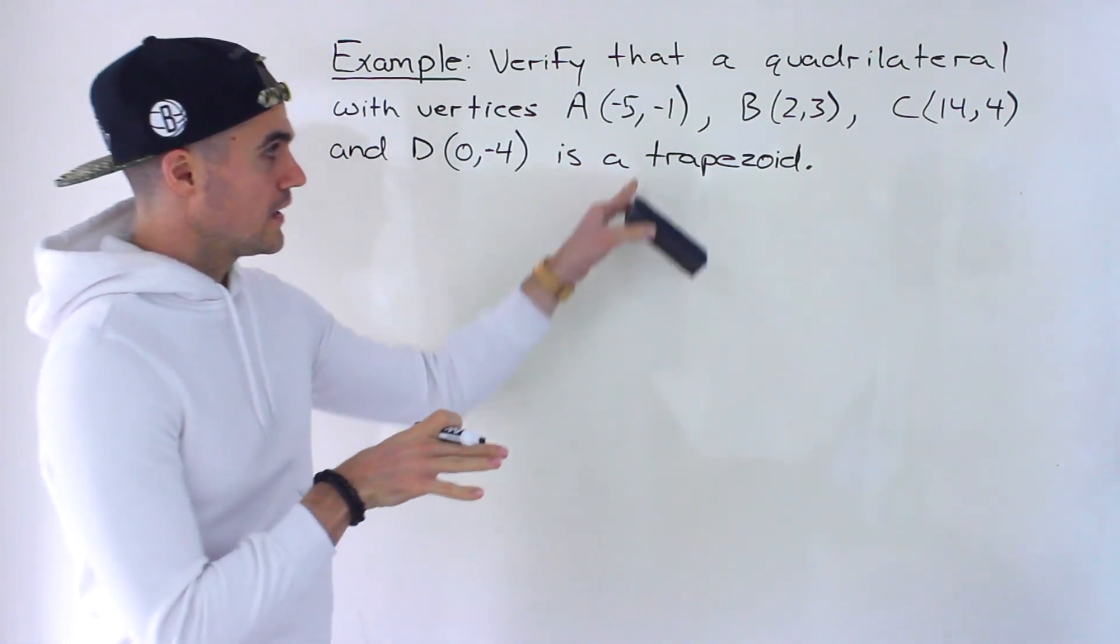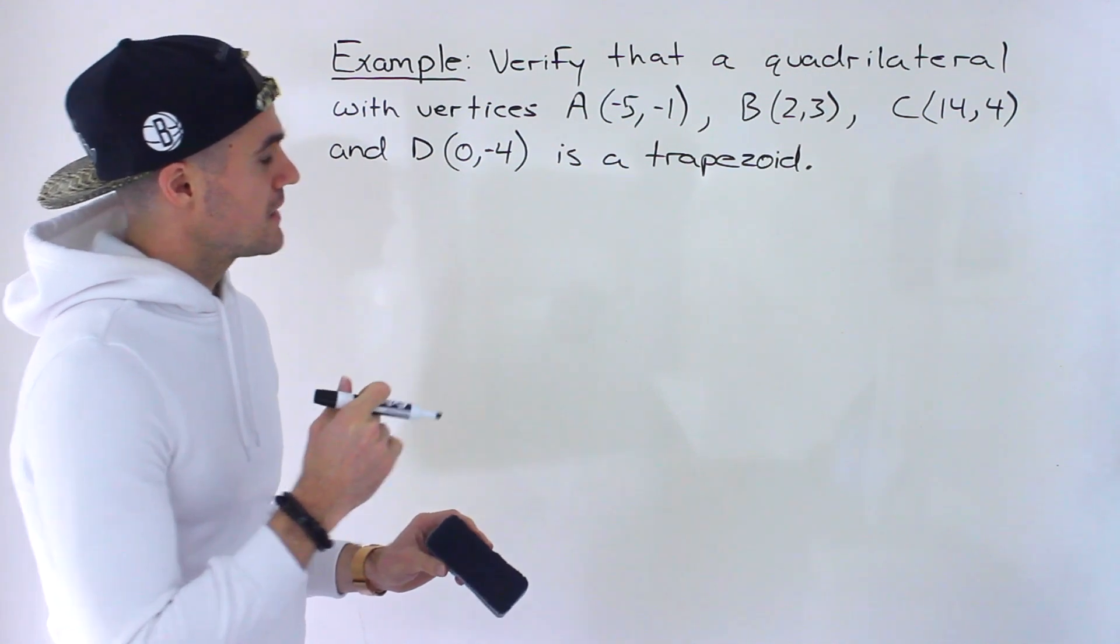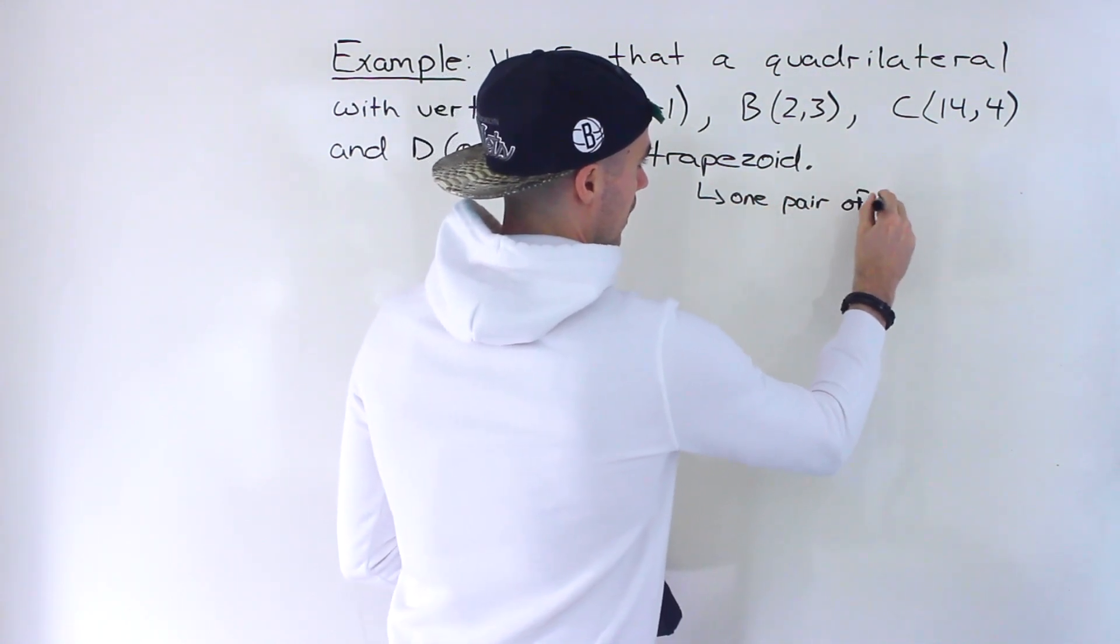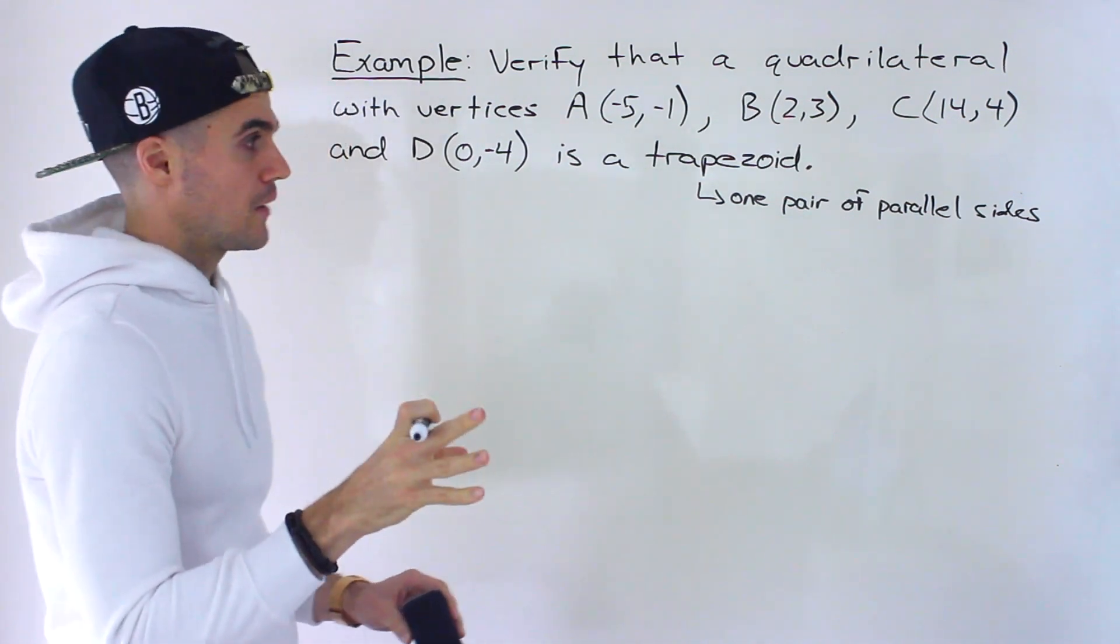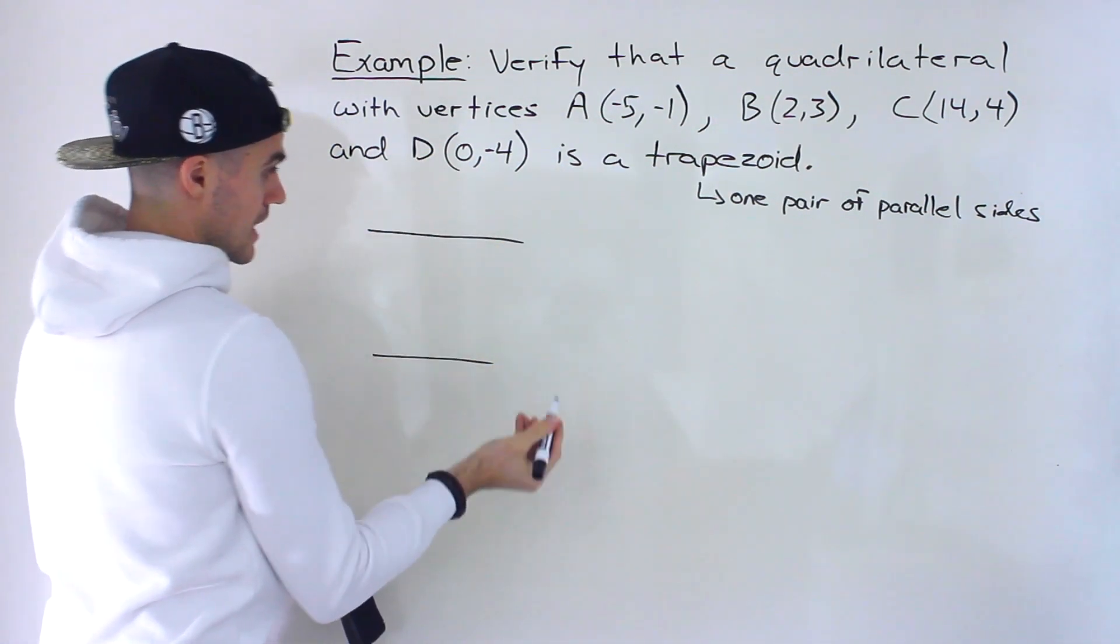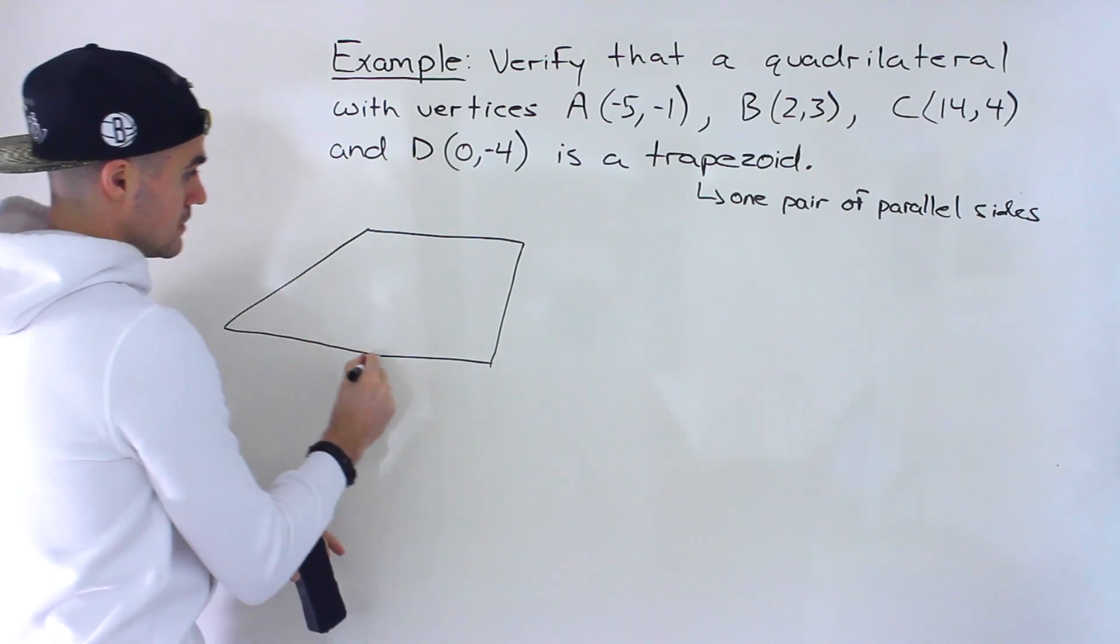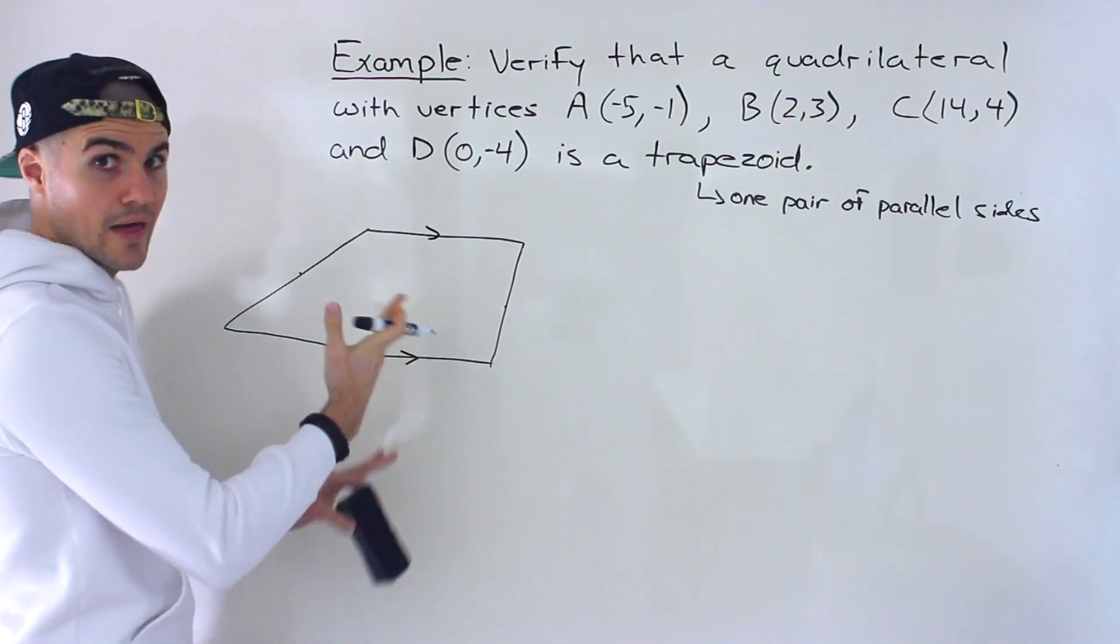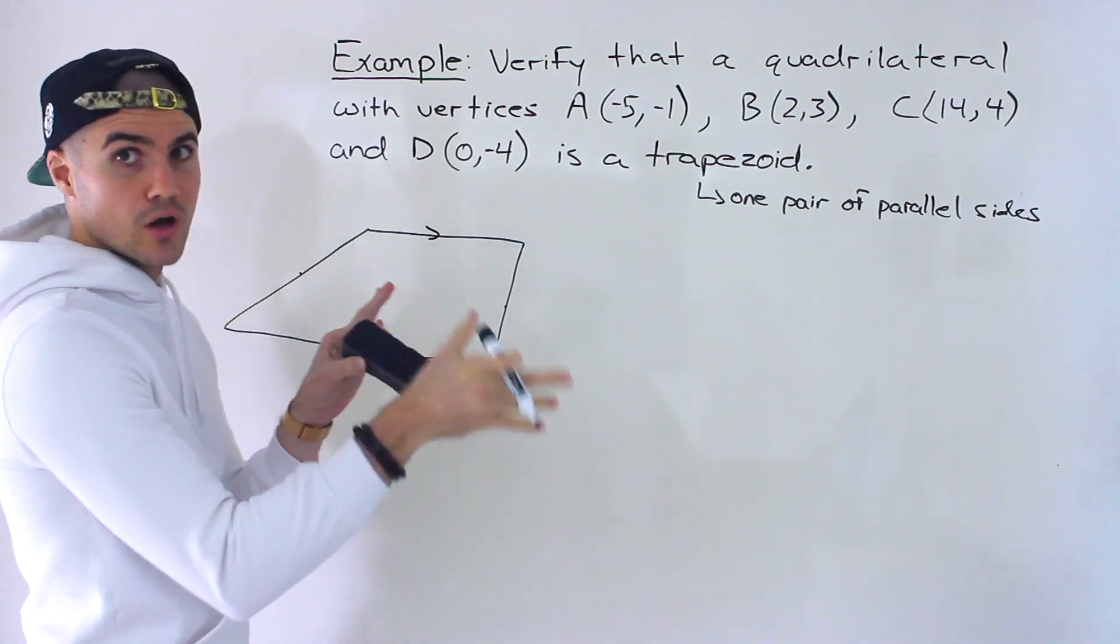So just as a quick review, what is a trapezoid by definition? You may see different definitions come up. The way I like to think of it, it's basically a quadrilateral that has one pair of parallel sides. Just one pair of parallel sides and then the other two sides are not parallel. So you would have two parallel sides and then these two other sides, they could be maybe like even like this, for example. This side and this side are not parallel. This side and this side are parallel. So that would be a trapezoid, for example.